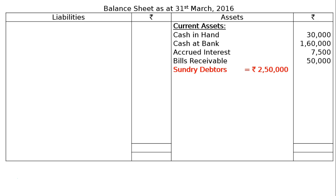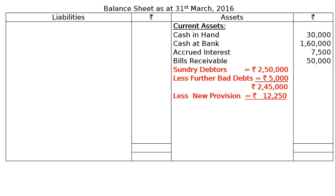Sundry debtors Rs. 2,50,000. We deduct further bad debt Rs. 5,000, leaving Rs. 2,45,000. Then deduct 5% provision for doubtful debts on Rs. 2,45,000, which is Rs. 12,250. The net debtors figure in the final column is Rs. 2,32,750. Next, closing stock Rs. 2,60,000 — this is the adjustment figure written for the second time.